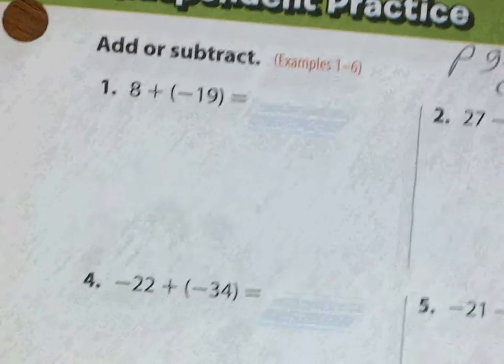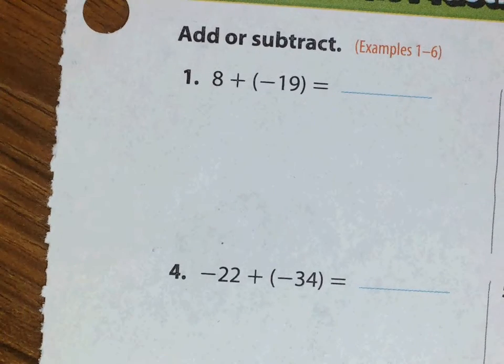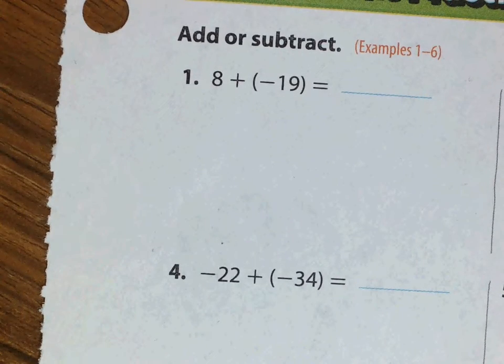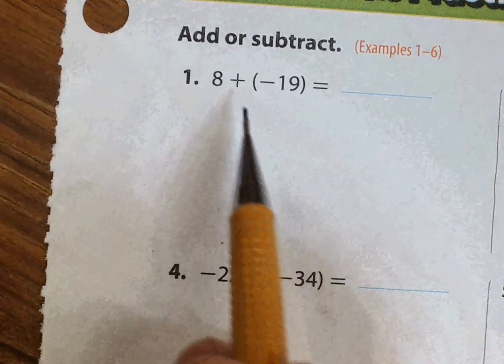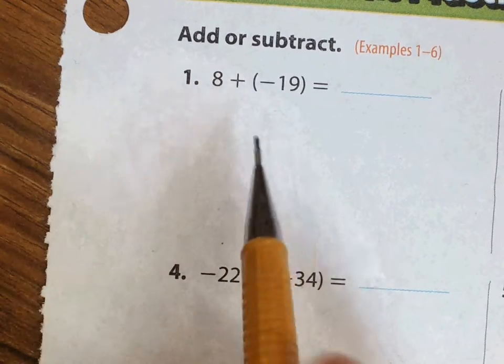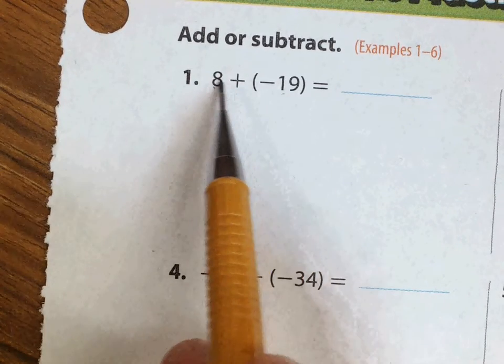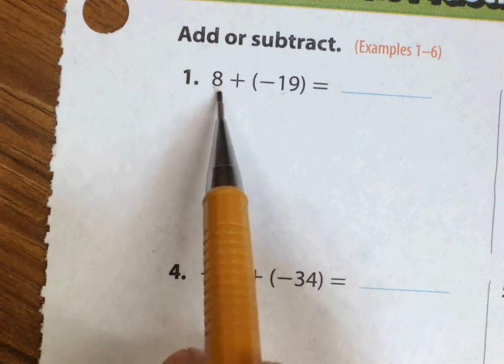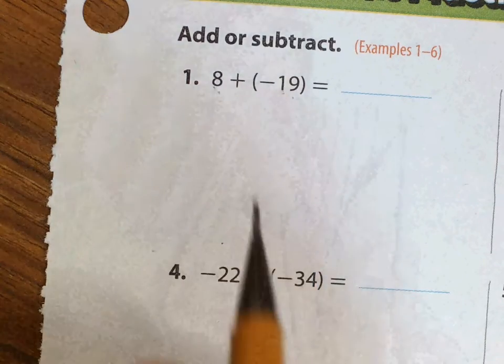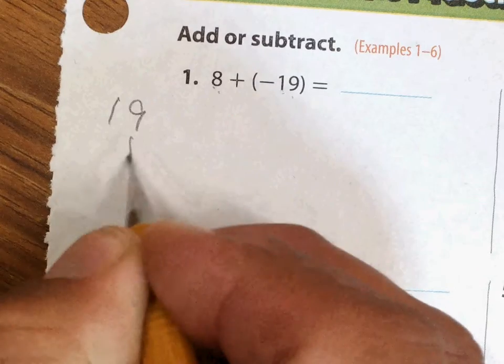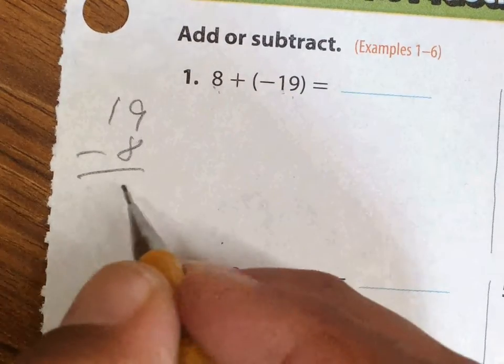Remember, according to our rules, what's the operation you should ask yourself? What's the operation? It's addition. Are the signs the same? One's positive, one's negative. So by rule, different signs subtract.